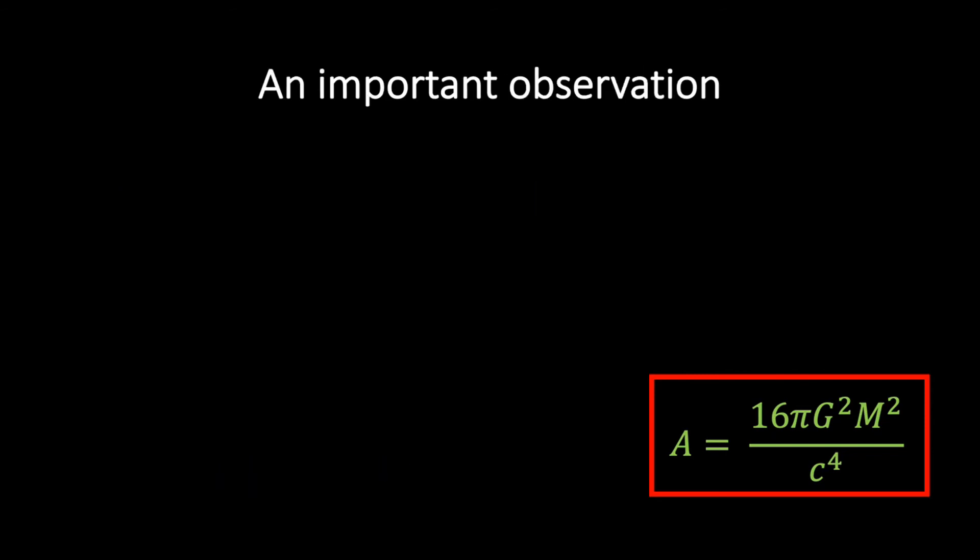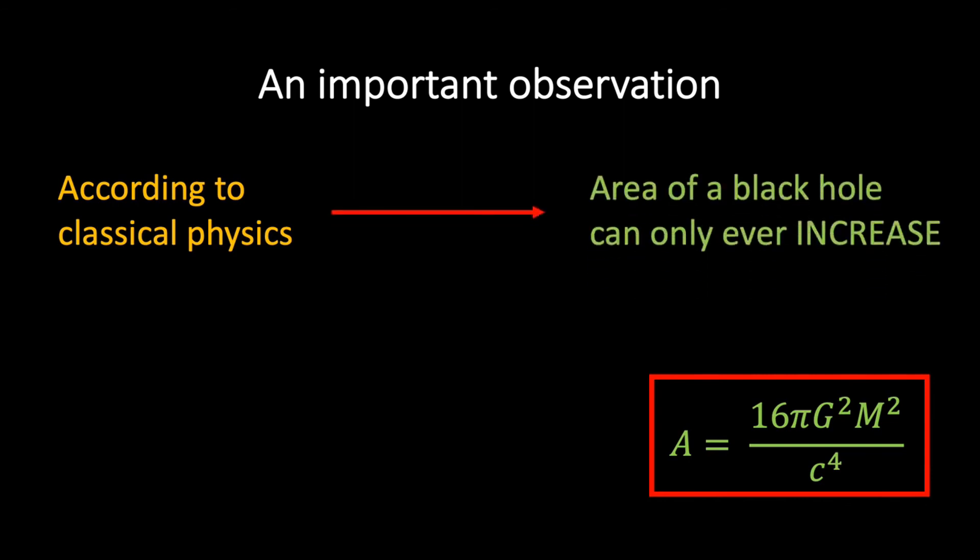So why is this mass-area relationship important, and what is it telling us about black holes? Well, the first thing to appreciate is that from a classical point of view, nothing can ever escape from inside the event horizon of a black hole. Therefore, in all physical processes, the area of the event horizon can only ever increase. It can never decrease.